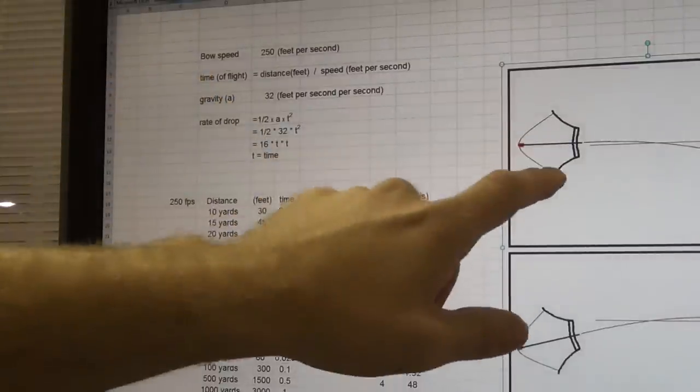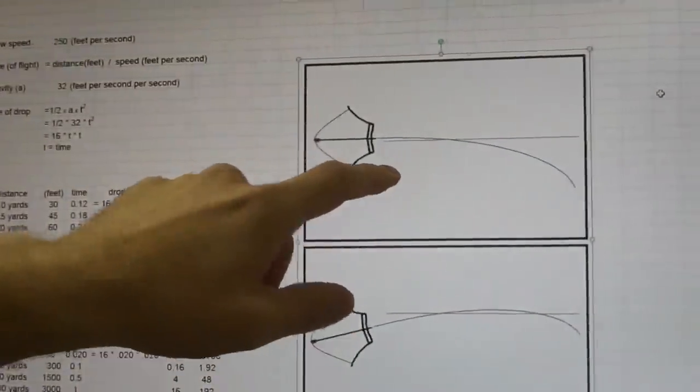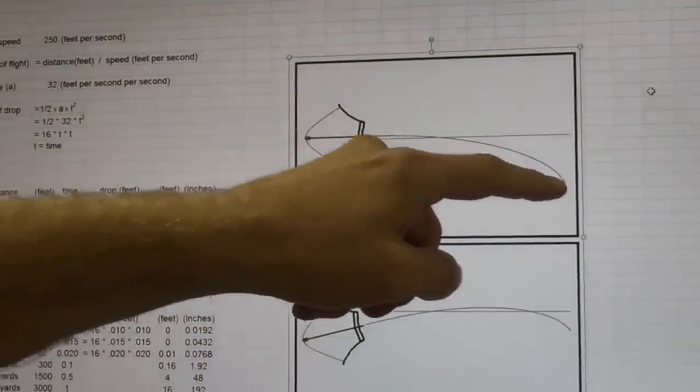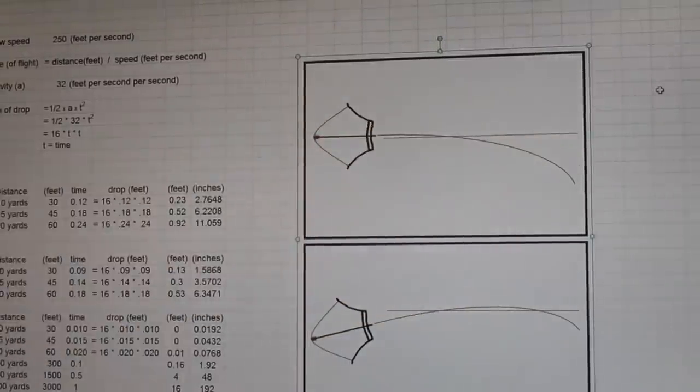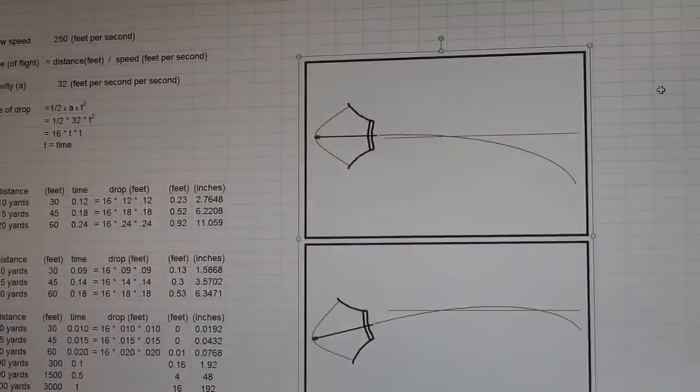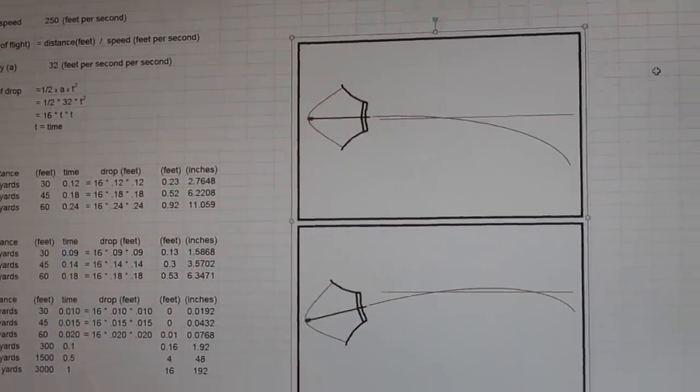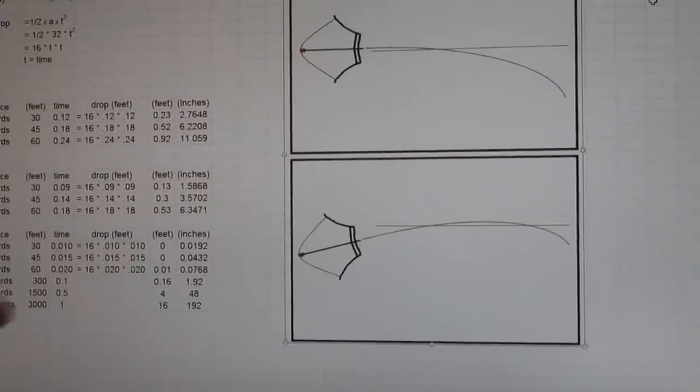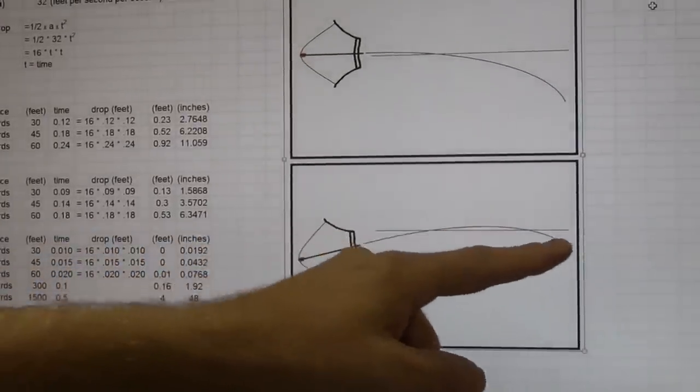Now, if you shoot a bow normally, or horizontally, it's going to follow a trajectory down. And this red line here is what your bow sight is, is a horizontal line. Now, yeah, it makes sense that generally you're going to shoot your bow up and shoot it down.